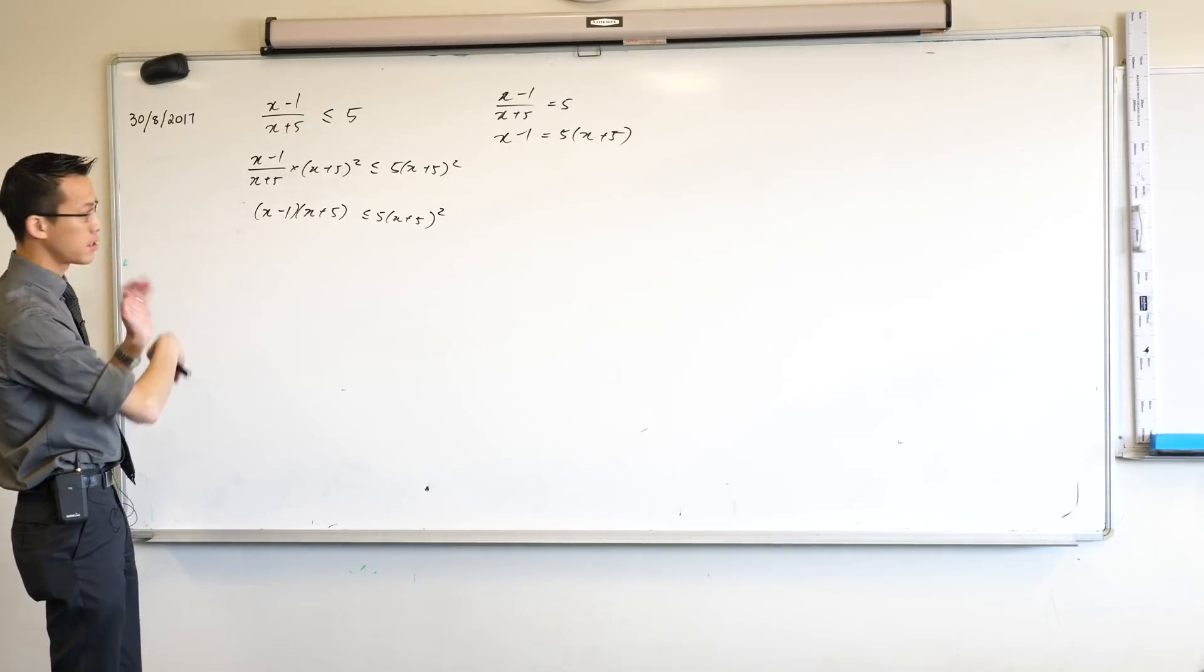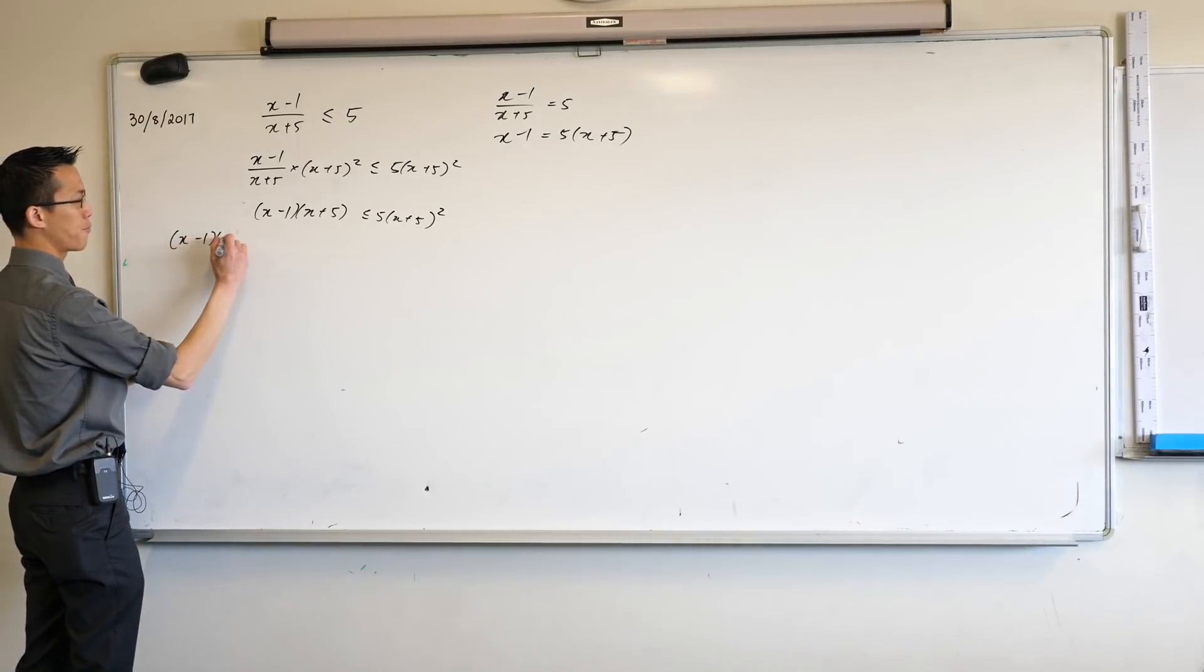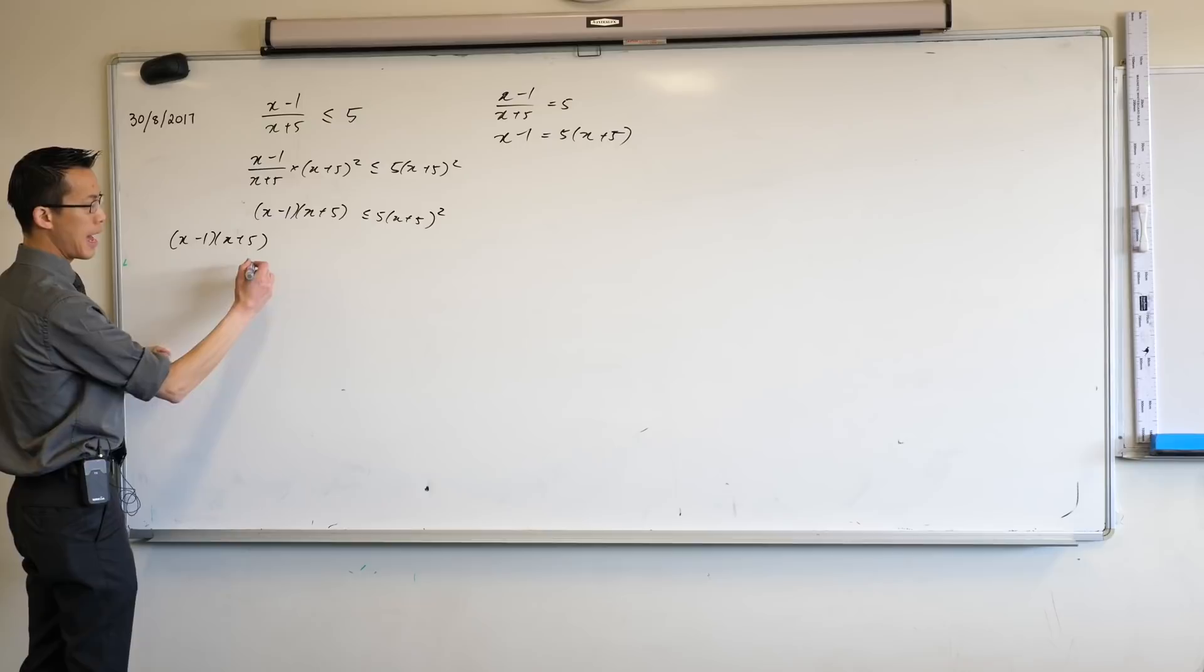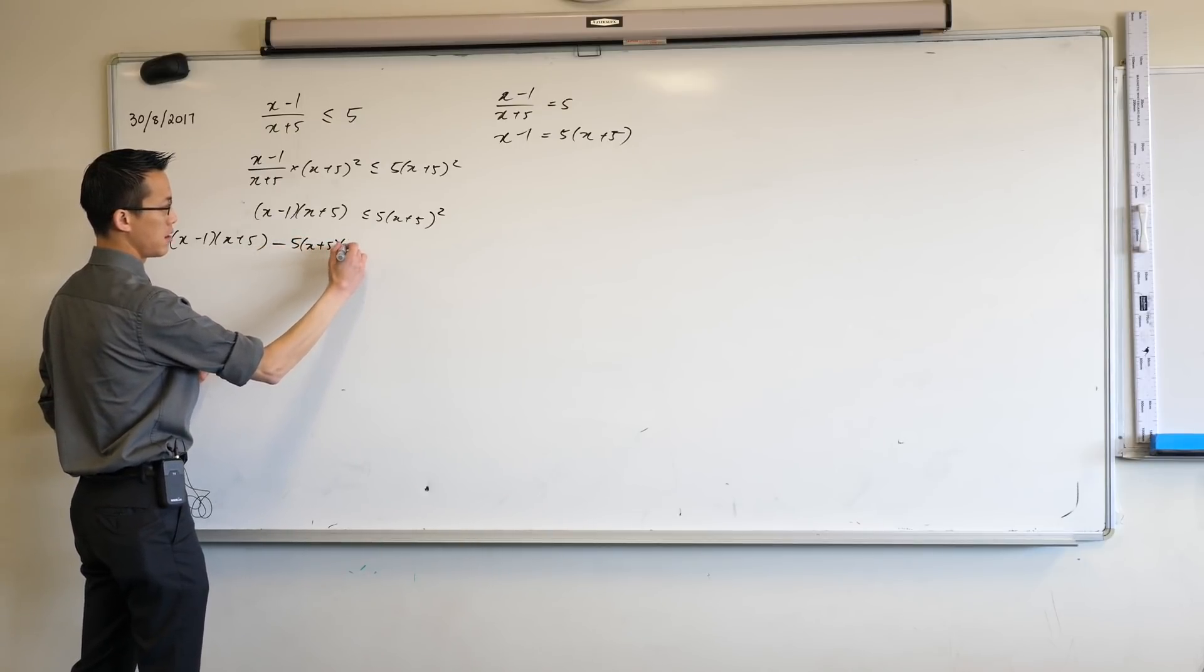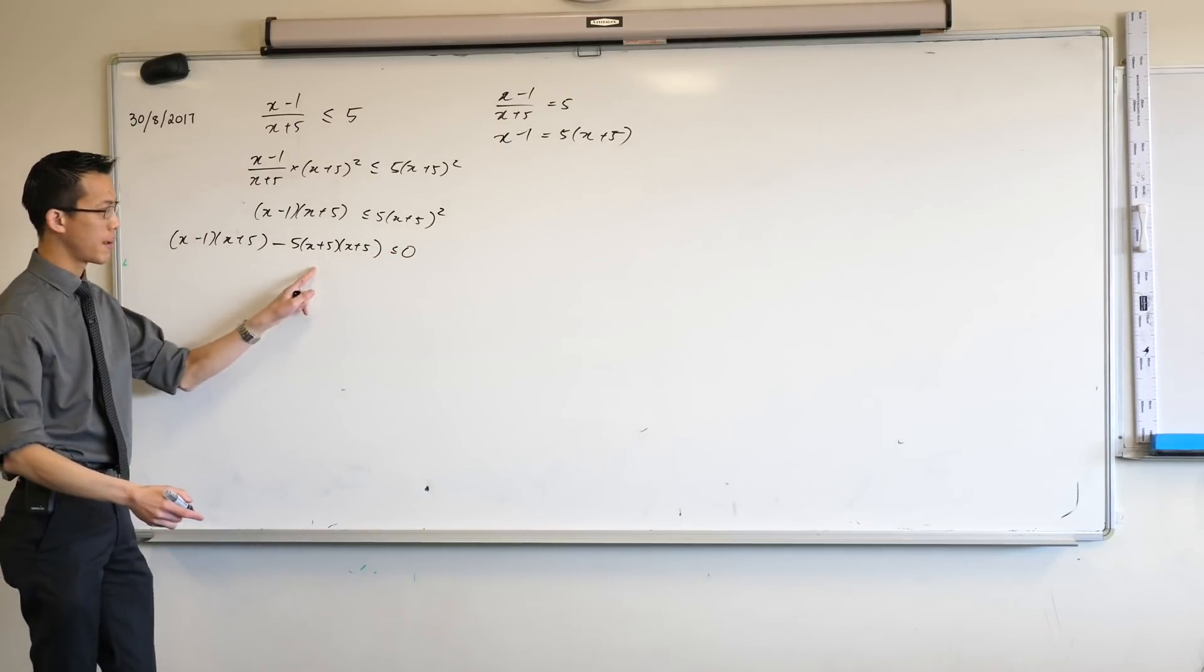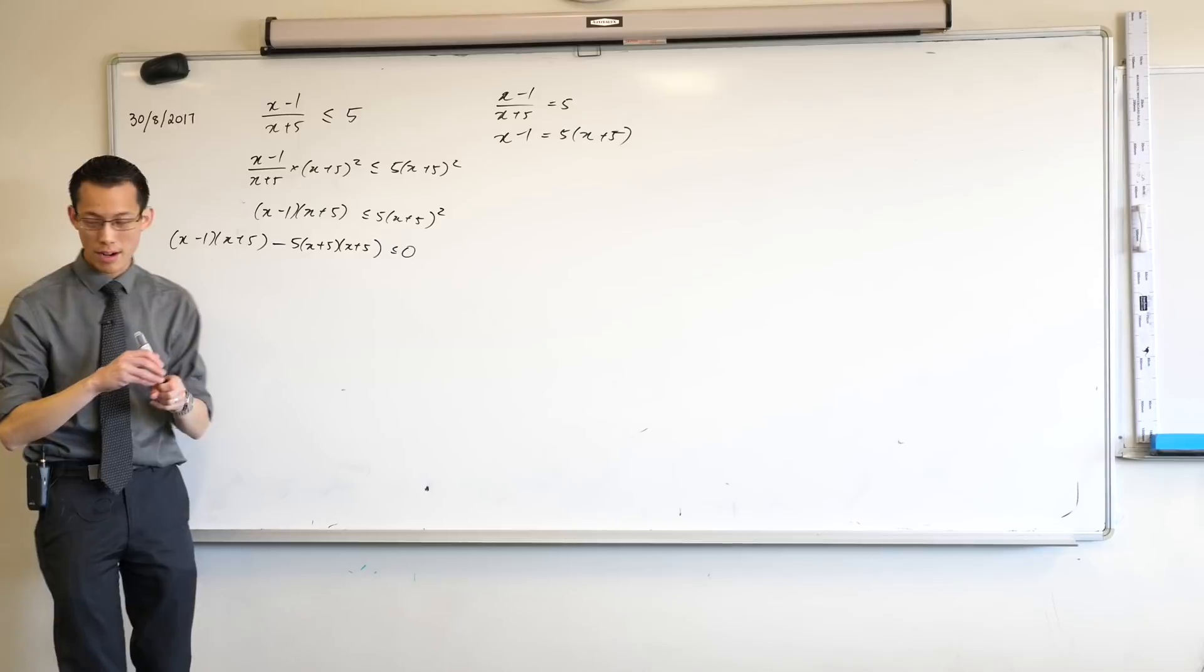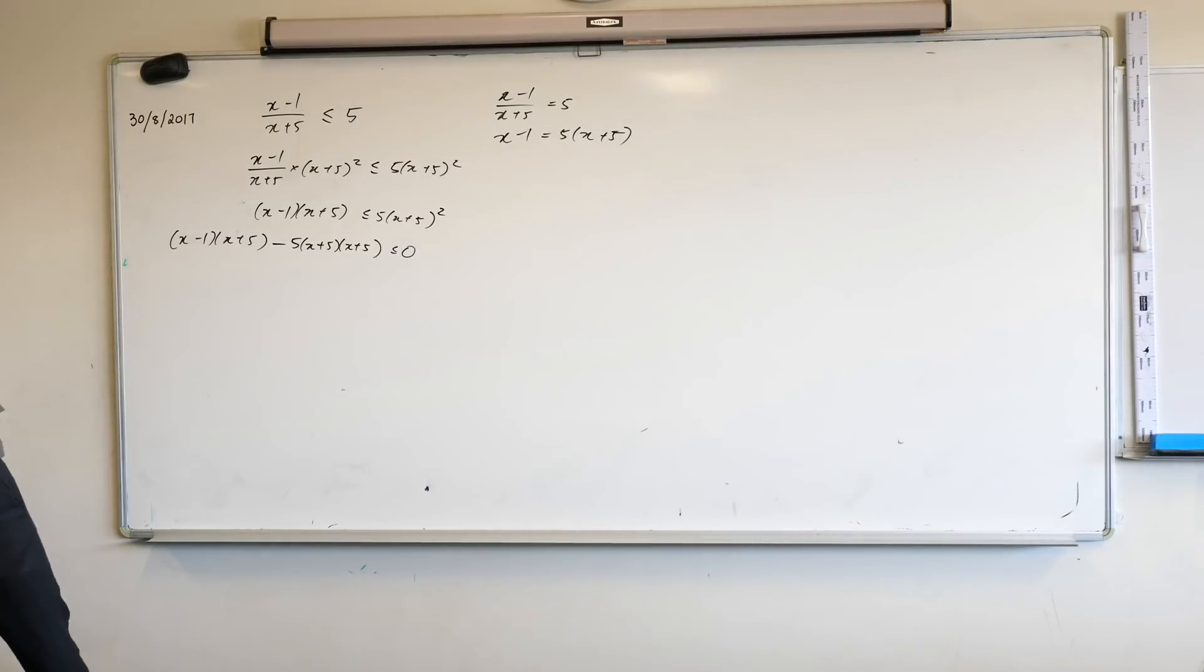First thing I'm going to do, I'm going to get everything on one side. So let's have everything on the left. So I've got this guy and then I've got this guy. Now I'm writing it in this fashion rather than writing squared to make it a little clearer how to factorize because you can see.